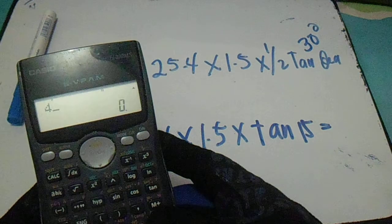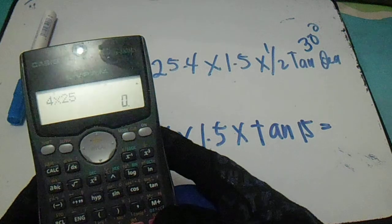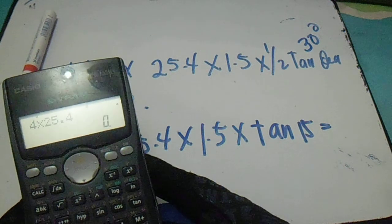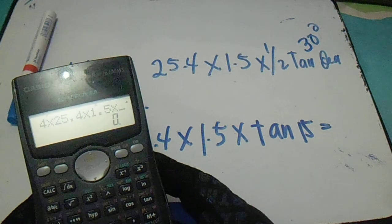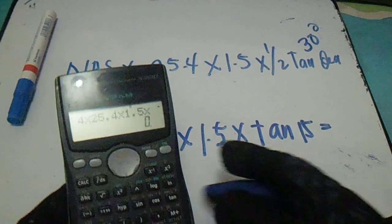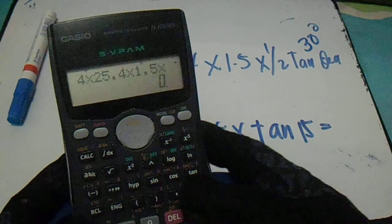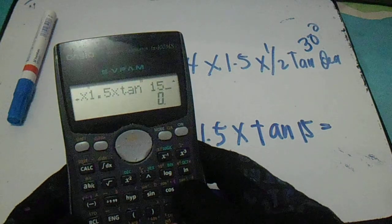So 4 inches multiplied by 25.4, multiplied by 1.5, multiplied by tan 15 degrees.